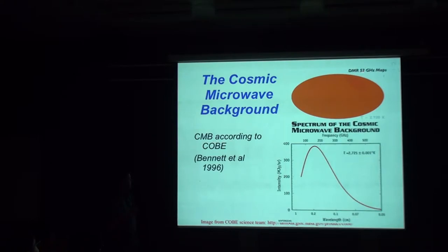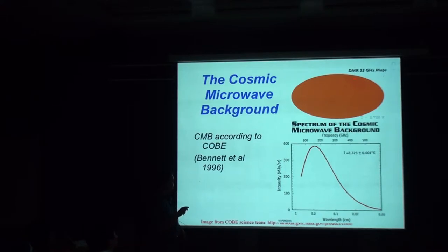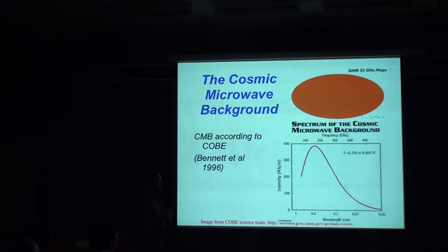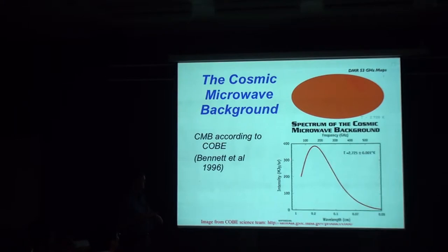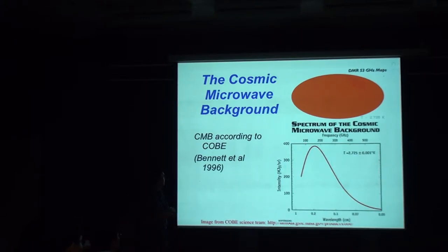COBE was a satellite around 1990. At 53 gigahertz you take a map of the sky — it's the least interesting map in the world. All you see is a monopole: a 2.728 Kelvin — now we think 2.725 Kelvin — almost completely isotropic background. Looking at the spectrum, you see it's an incredibly good blackbody at 3 Kelvin. And importantly, it's extremely smooth.